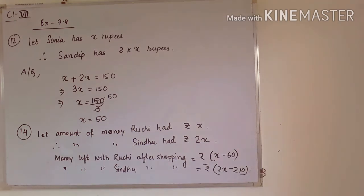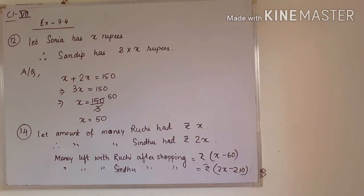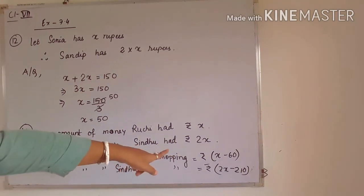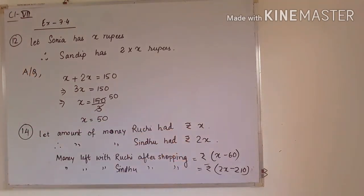Question number 14: Let the amount of money Ruchi had be rupees x. Therefore the amount of money Sindhu had is rupees 2x, since Sindhu has twice the money Ruchi had. Ruchi shopped for utilities worth rupees 60, so her expenditure is 60. The money left with Ruchi after shopping is x minus 60.